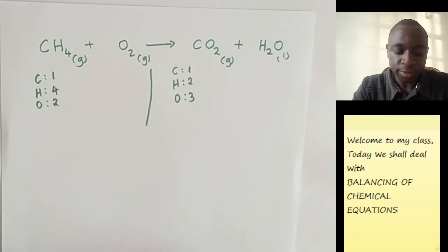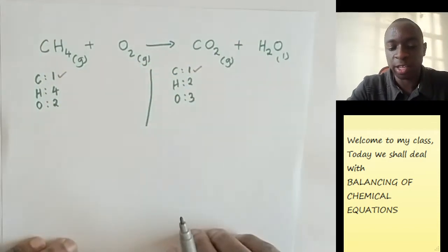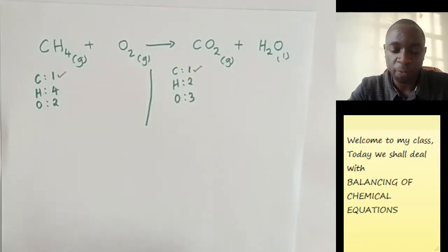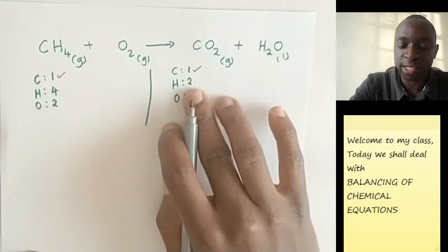Now, looking at this one, this is how we're going to start. We have seen that carbon is already balanced, so there's no problem with it. We're not going to touch it for now. Then we go on to the next part, which is hydrogen. We have four hydrogens on this side and only two on this side.